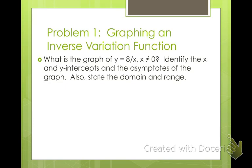So what is the graph of y equals 8 divided by x, where x cannot equal 0? Identify the x and y intercepts and the asymptotes of the graph. Also, state the domain and the range. So in order to graph these, we need to make a table of values, both positive values and negative values.